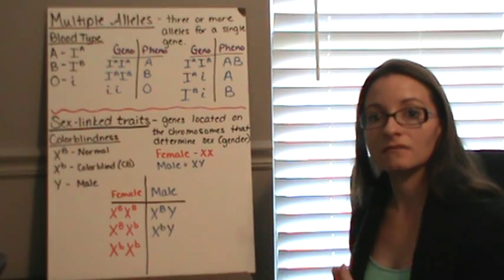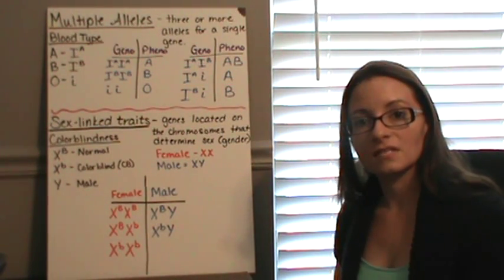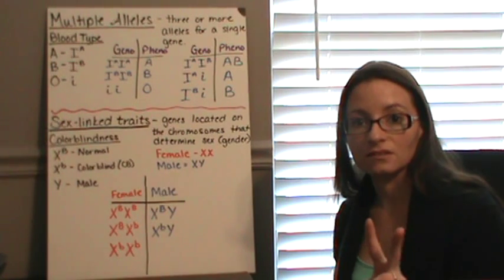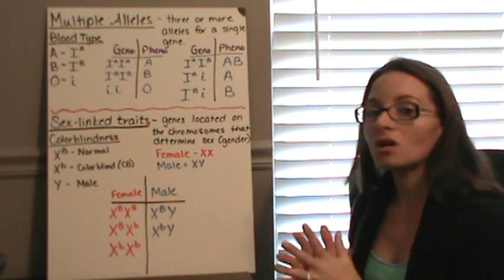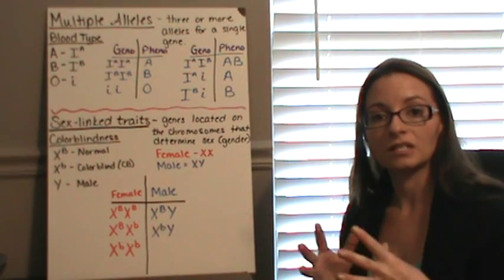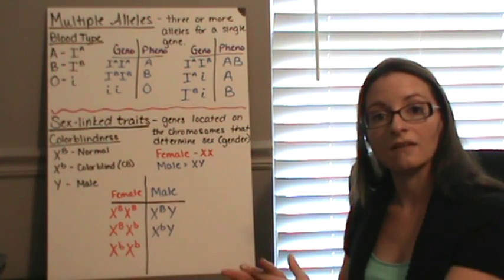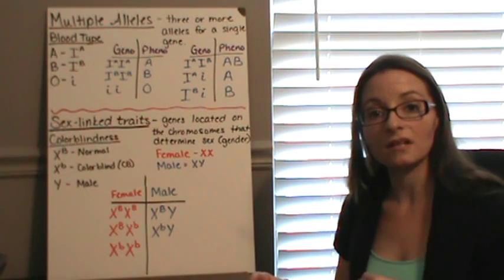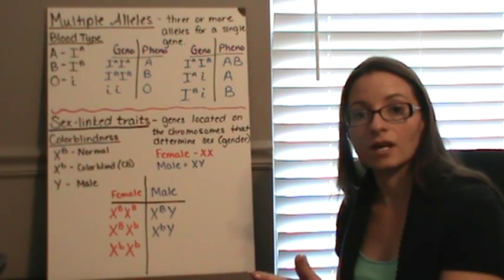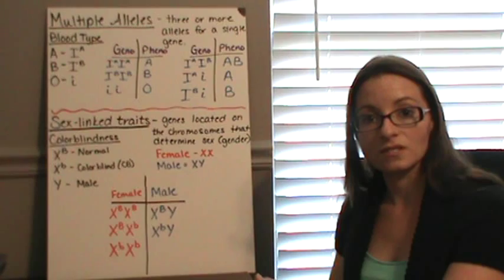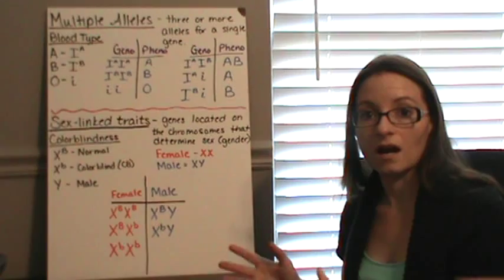The next pattern of inheritance is called multiple alleles. Everything we've looked at so far has only two alleles for a trait. With multiple alleles, there could be three, four, five, or even more different alleles. Each person still only carries two of those alleles — they could be the same or different — but this is where you get lots of different combinations within the population.